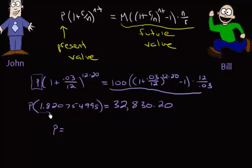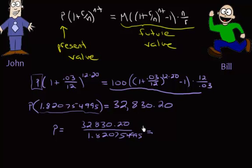So when you solve for P, you're going to divide both sides by this long decimal here. So we're going to get $32,830.20 divided by 1.820754995, and we're going to get $18,031.09.